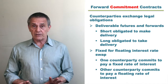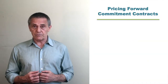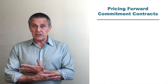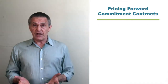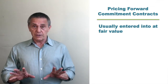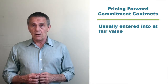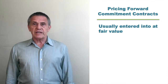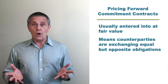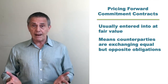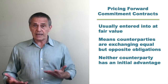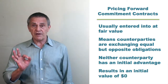What are some of the implications of that? Let's start with a pricing illustration. In the vast majority of forward commitment contracts, the parties are exchanging these equal but opposite obligations at fair value — what's sometimes referred to as an at-market swap, or in the parlance of the current interest rate swaps market, a par swap. If counterparties are exchanging equal but opposite financial obligations, neither party has an advantage versus the counterparty. Implication? The initial value is zero.